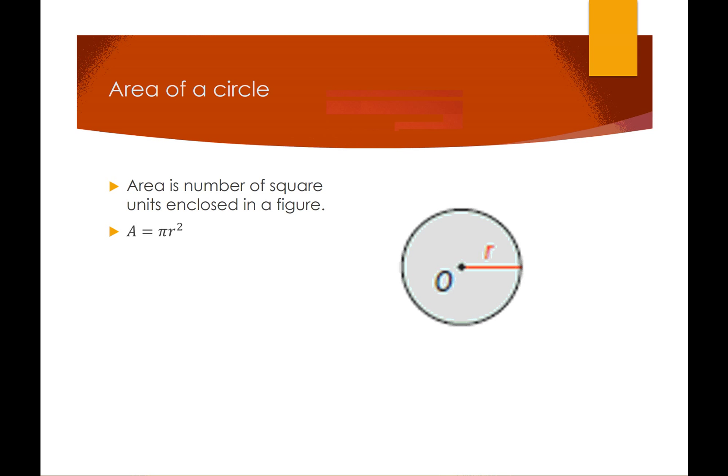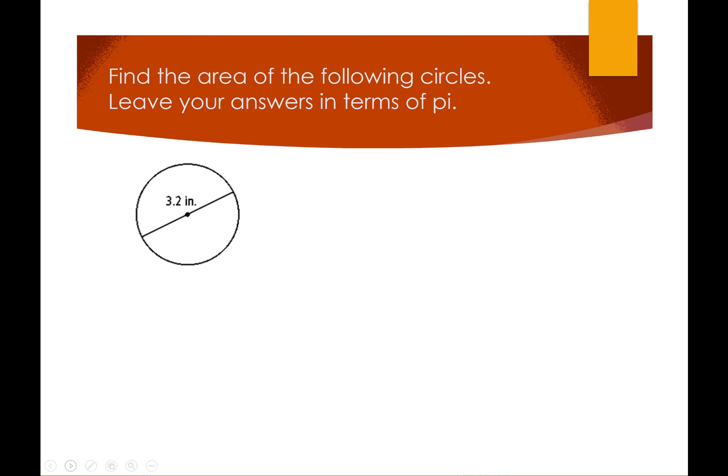So basically, you know this: area is a number of square units enclosed in a figure, and for circles you find it by πr². If I wanted to find the area of the circle and leave it in terms of π, since I've got the diameter, I've got to divide this by 2, so it's going to give me a radius of 1.6 inches.